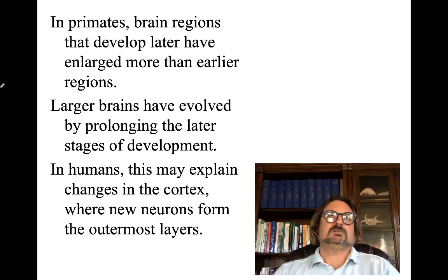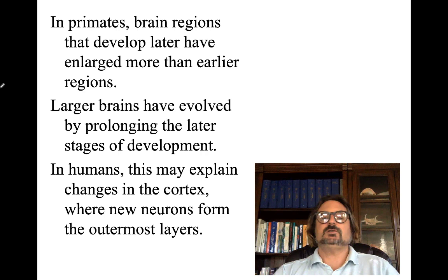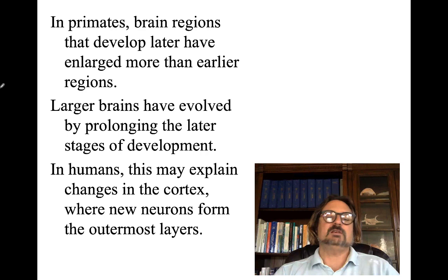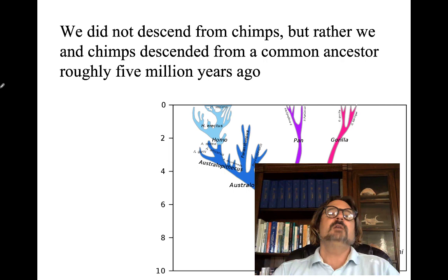Studies demonstrate this, where adolescents are asked to reappraise their likelihood of crashing if they're drinking and compared to adults. Even when presented with new information, it's hard for adolescents to update their risk assessment — they're more likely to say 'this could never happen to me.' This is related to the underdeveloped prefrontal cortex.